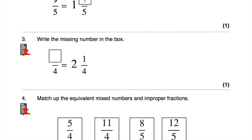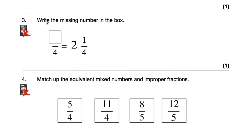Question number 3: the top-heavy fraction blank over 4 is equal to 2 and a quarter. We're dealing with quarters. In a whole there are 4 quarters, so in 2 wholes it would be 8 quarters, and then we've got another one, so it would be 9 quarters. The missing number is 9, because 9 quarters is 2 and a quarter. Another way to do that is to take the whole number 2, times it by 4 to get 8, then add 1 to get 9. So that's 9 quarters.